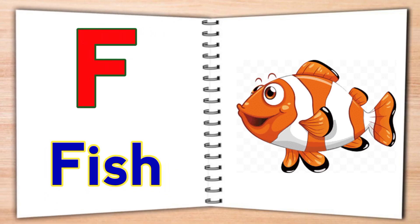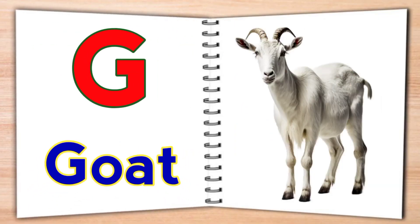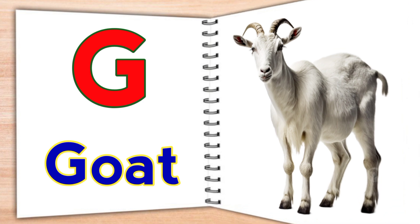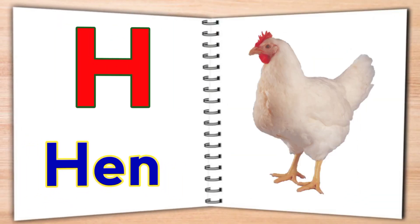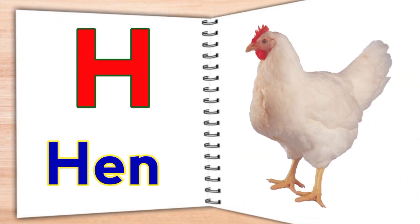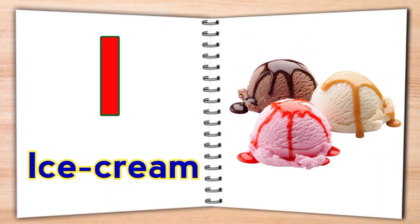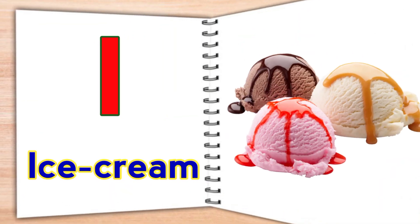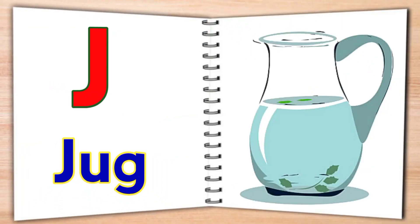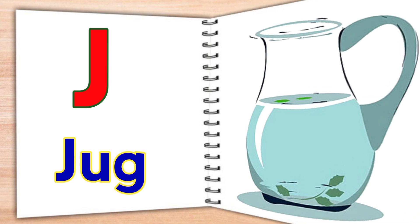F for fish, G for goat, H for hen, I for ice cream, J for jug.